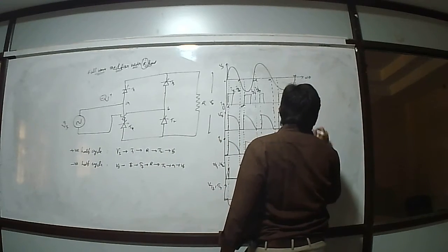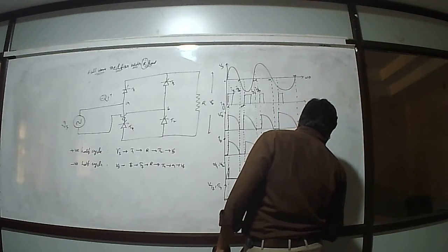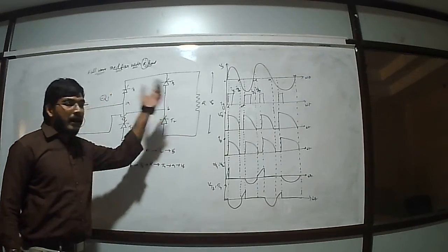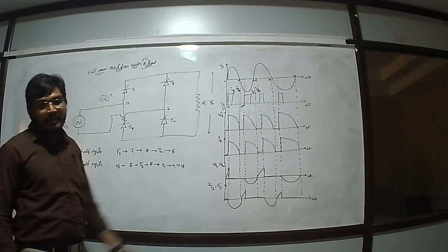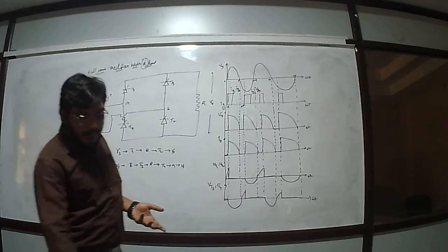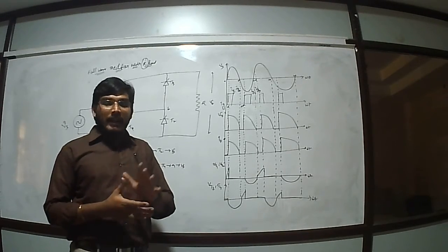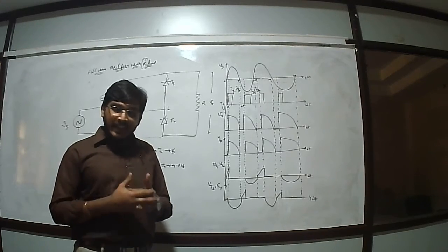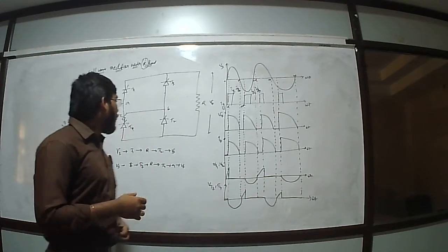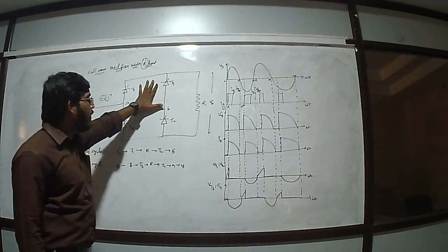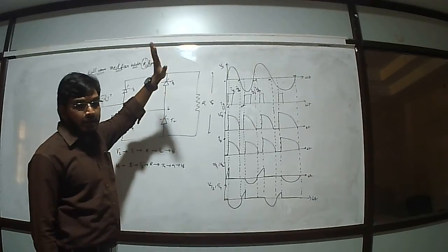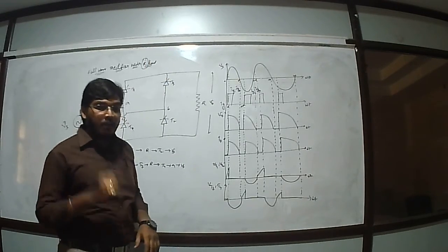This is the simple operation of a full wave bridge rectifier with an R load. Instead of keeping an R load, we can also use RL or RLC loads, or even connect a drive system — that is, a machine. Depending upon the firing angle and supply range, the machine speed will vary. In this way, we can explain the construction and operation of a full wave bridge rectifier with an R load. Thank you very much.